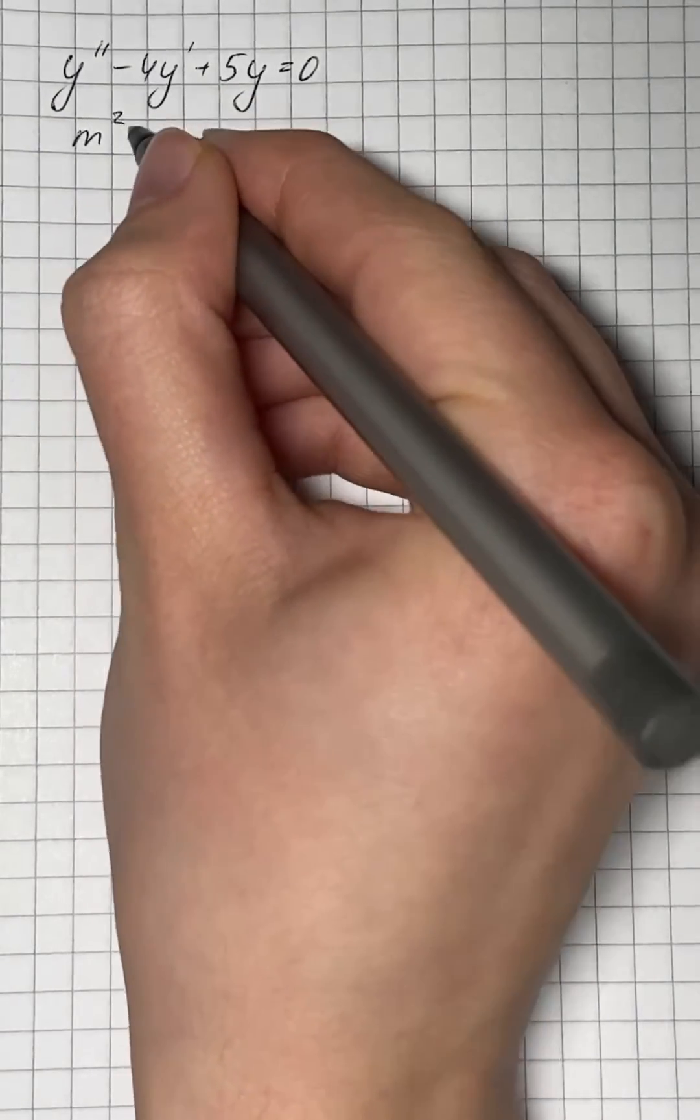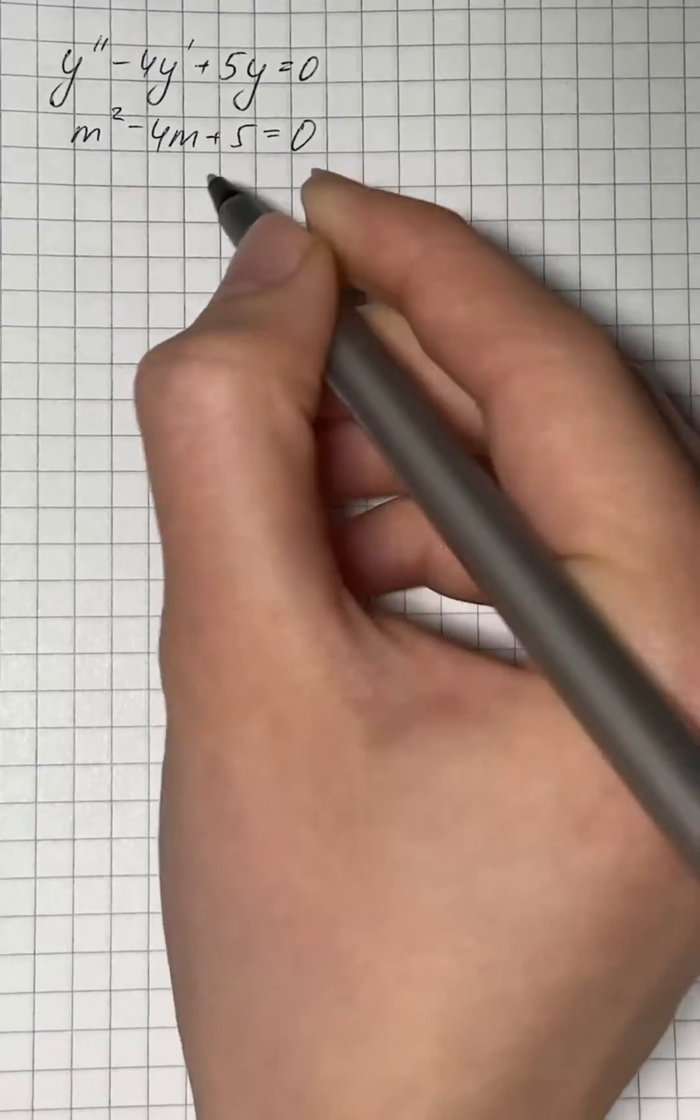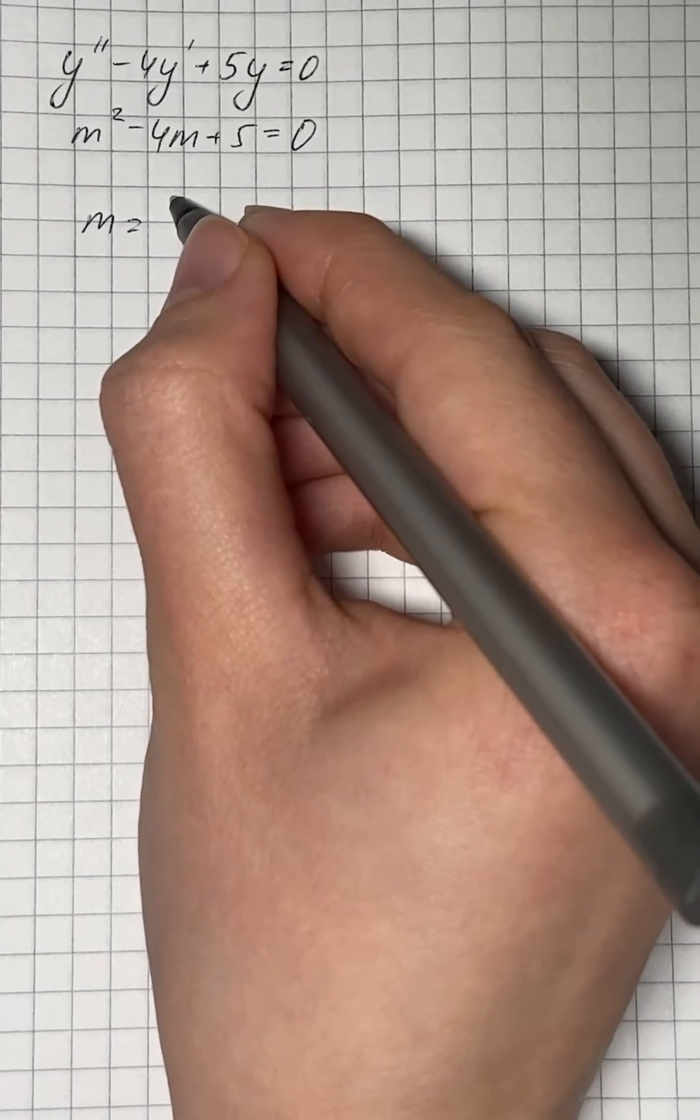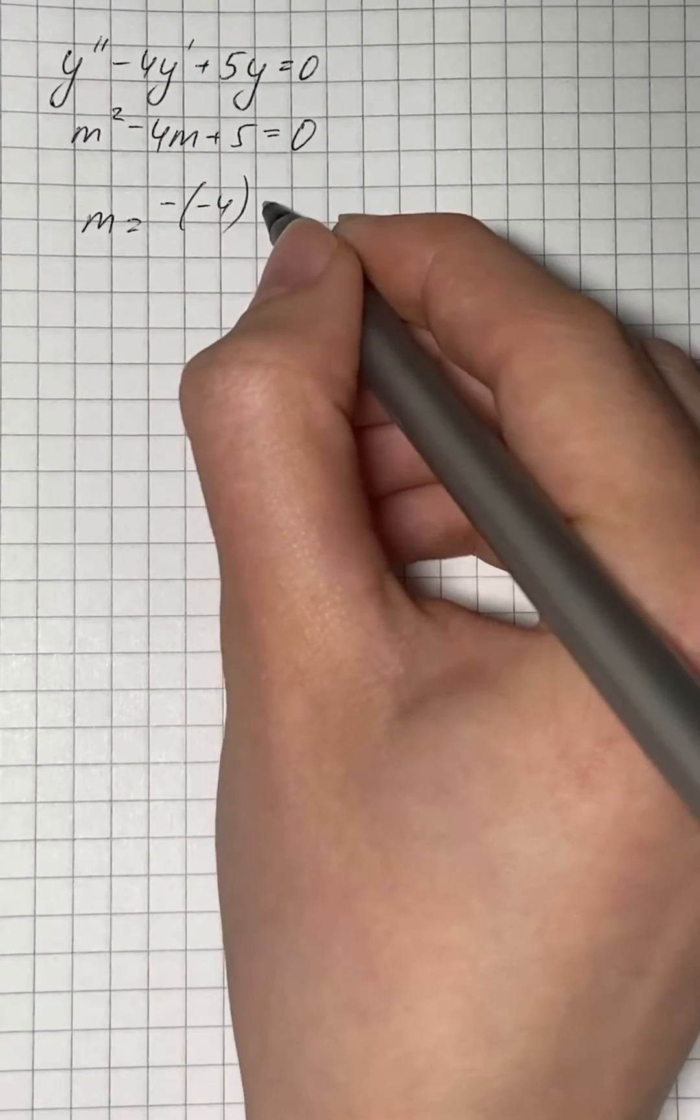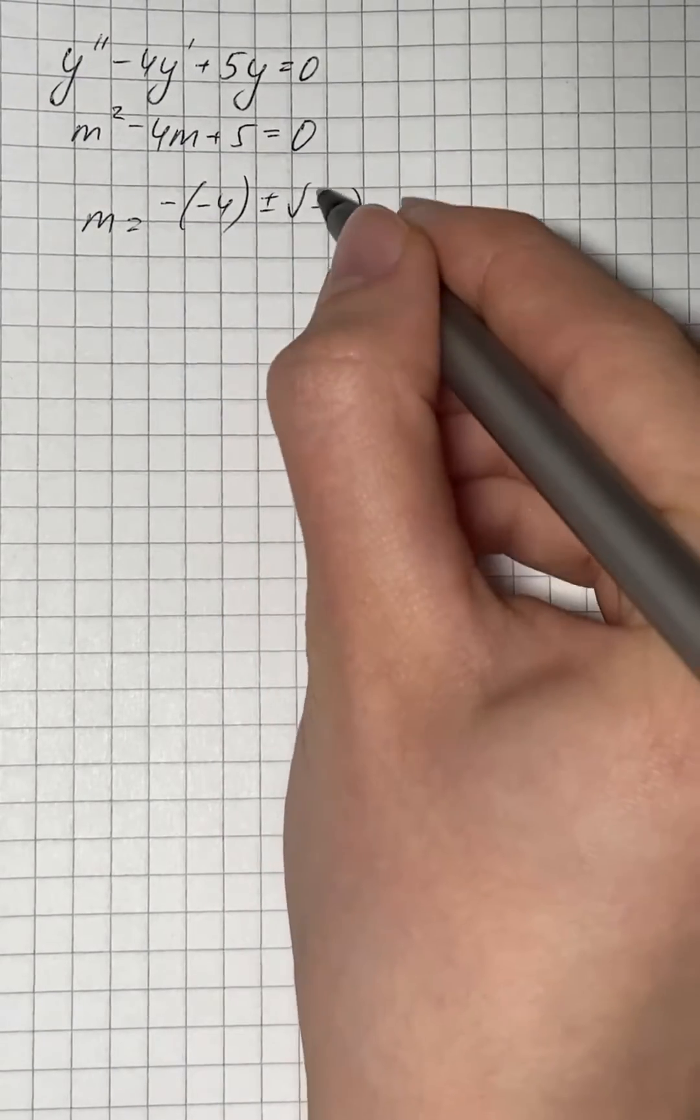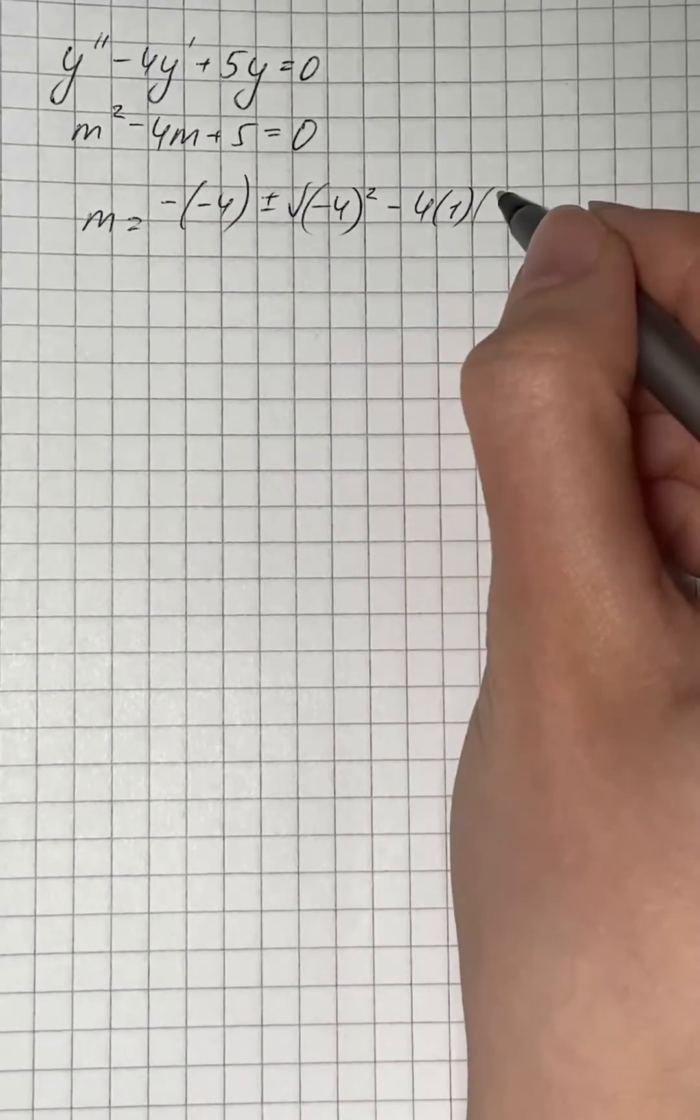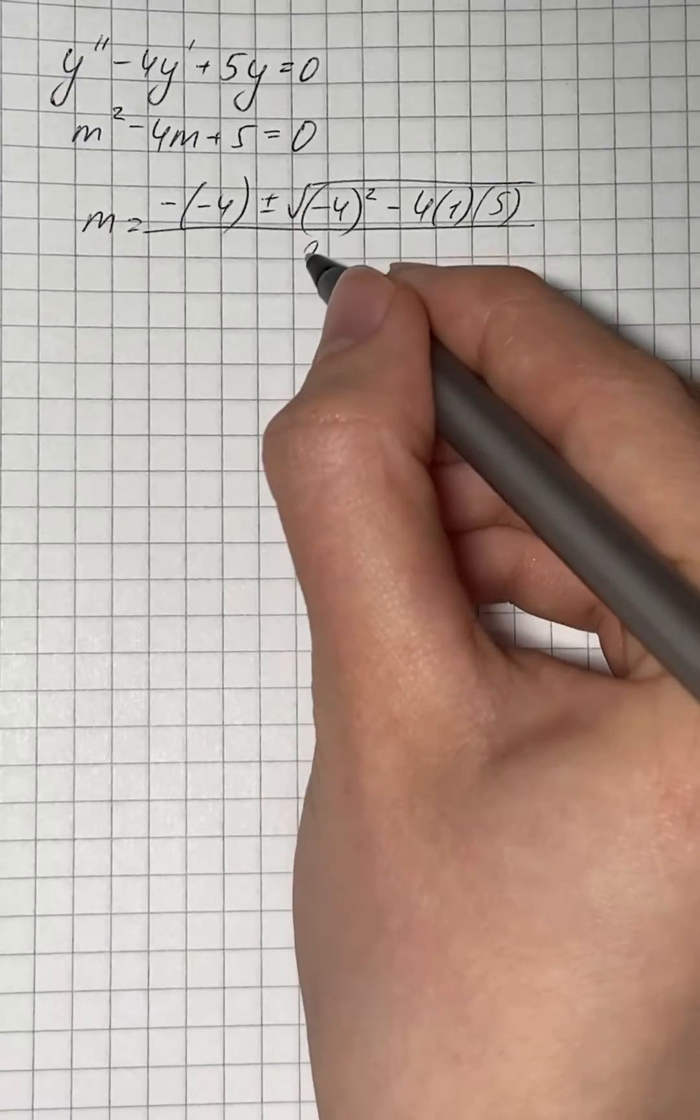which is m squared minus 4m plus 5 equals to 0. So, m equals to 4 plus or minus square root of negative 4 squared minus 4 times 1 times 5, all over 2 times 1.